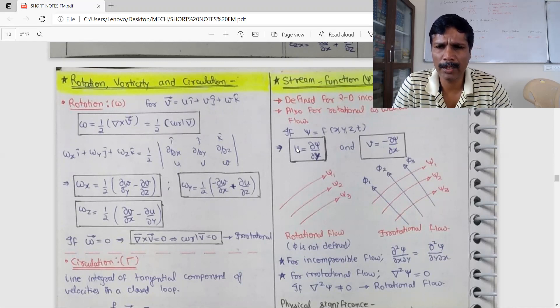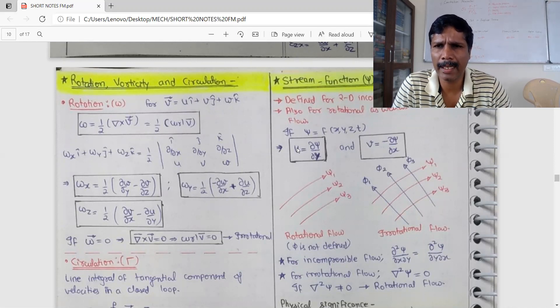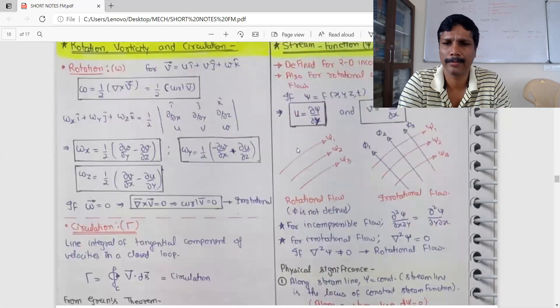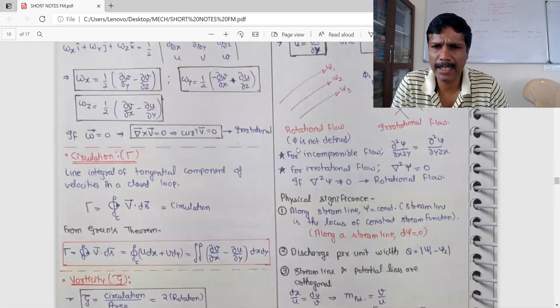For incompressible flow, del square psi is not equal to 0. If you have to find the flow of the net.